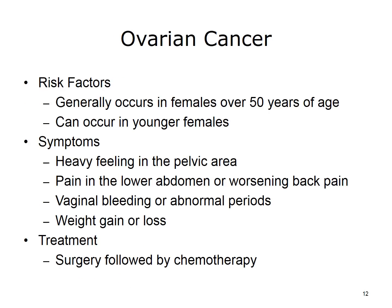Ovarian cancer generally occurs in women over 50 years of age, but it can also occur in younger women. This type of cancer is very difficult to detect. When the diagnosis is made in an early stage, there is a better chance of recovery. Symptoms include a heavy feeling in the pelvic area, pain in the lower abdomen, bleeding from the vaginal area, weight gain or weight loss, abnormal periods, and unexplained back pain that worsens over time. Treatment is usually surgery, followed by chemotherapy.